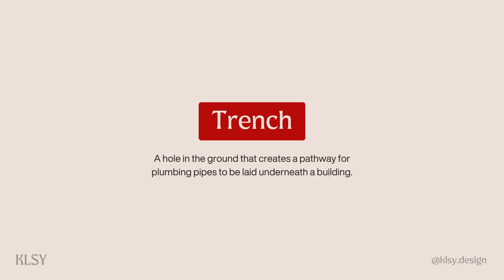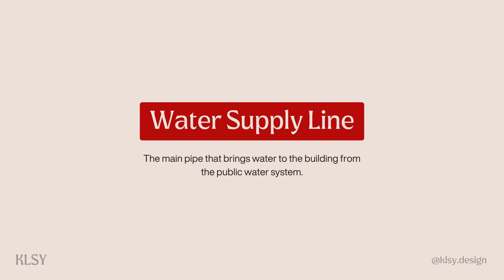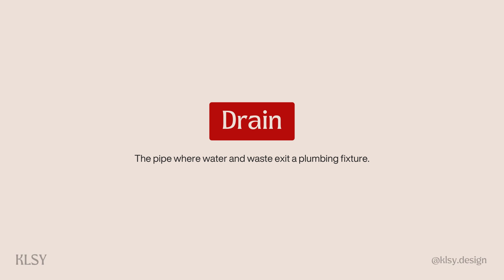A trench is a literal trench — a hole that's dug into the ground and creates a pathway for plumbing pipes to be laid underneath a building. The water supply line is the main pipe that brings water to the building from the public water system. The drain is just like you think it is: it's the pipe where the water drains out of, like the drain of a shower or from a toilet or sink.